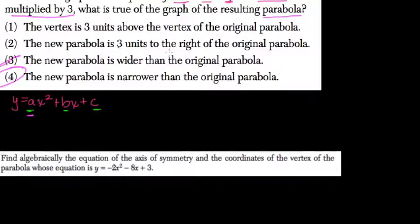And is it 3 units to the right or 3 units above? Well, 3 units above would be adding the c value. And 3 units to the right, you can experiment with that and see how that relates to the b value.